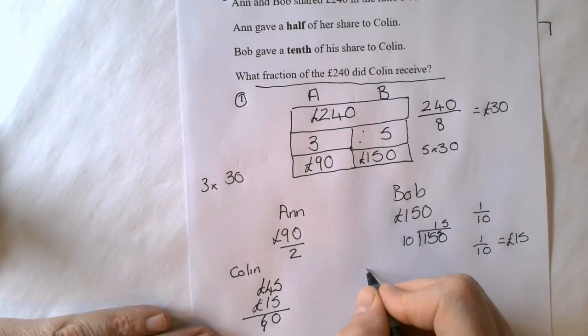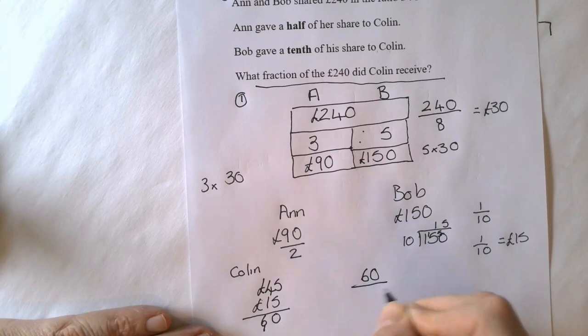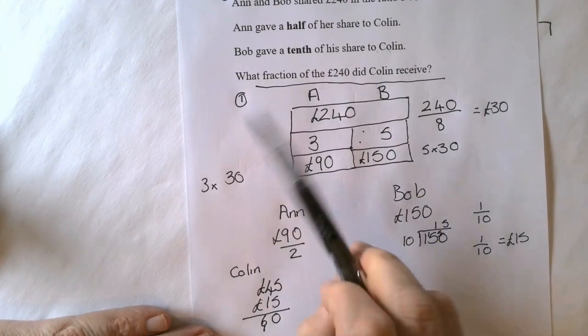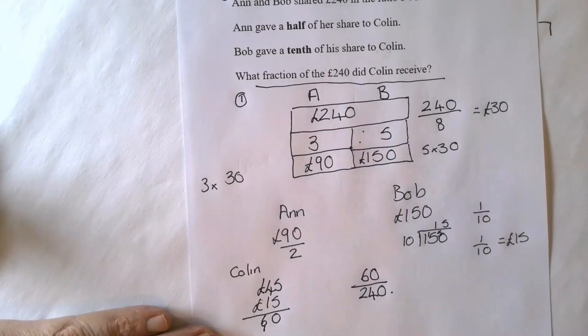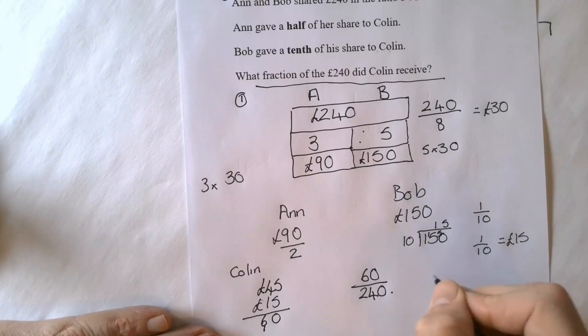But we've got to be careful here. It says what fraction of the £240 did Colin receive. So the fraction is 60 pounds out of 240 pounds. Now in this case it doesn't say in its simplest form, but it's always worthwhile to do this.